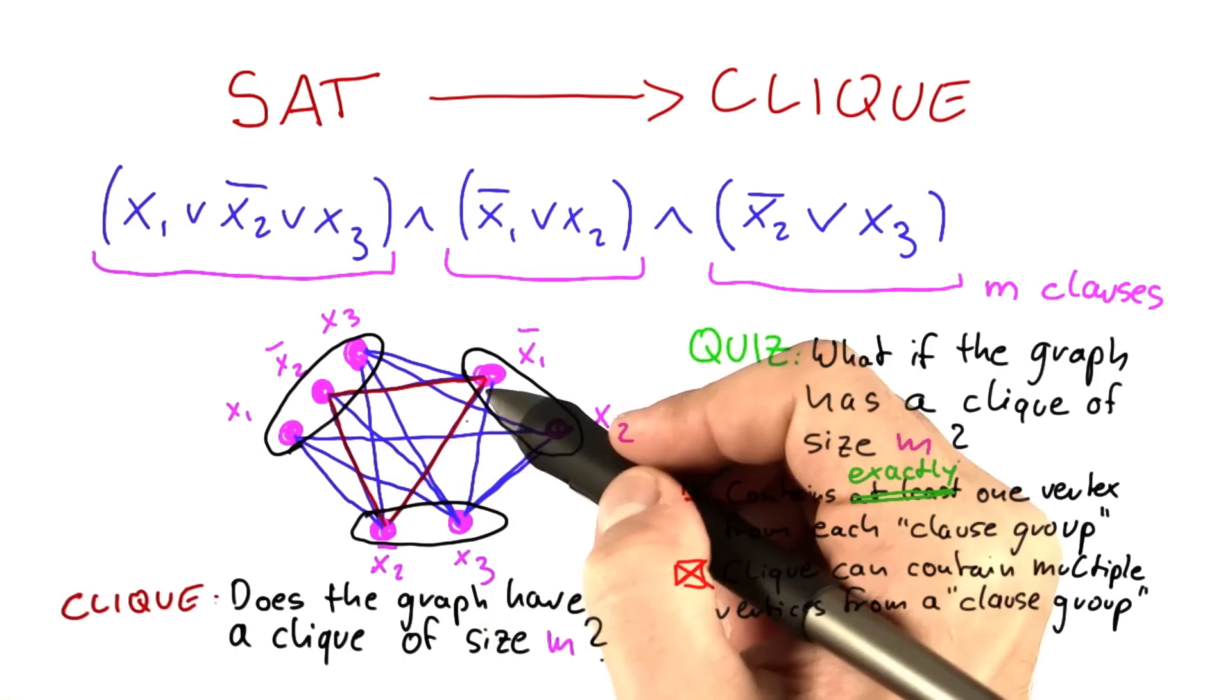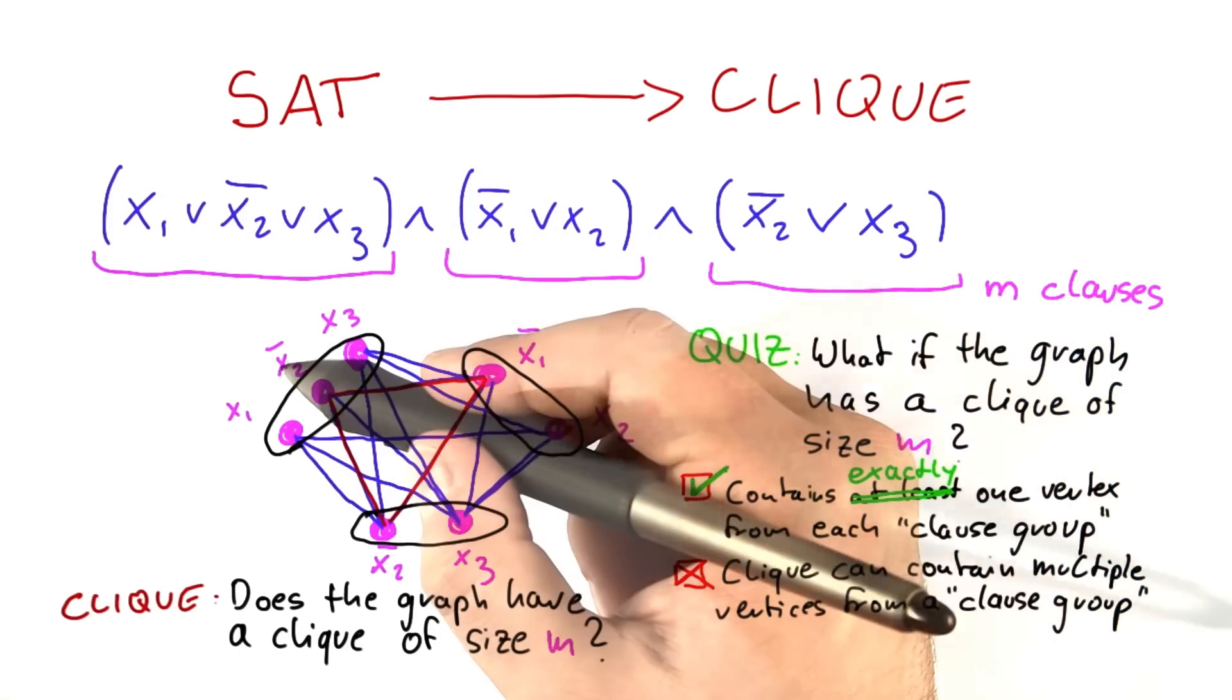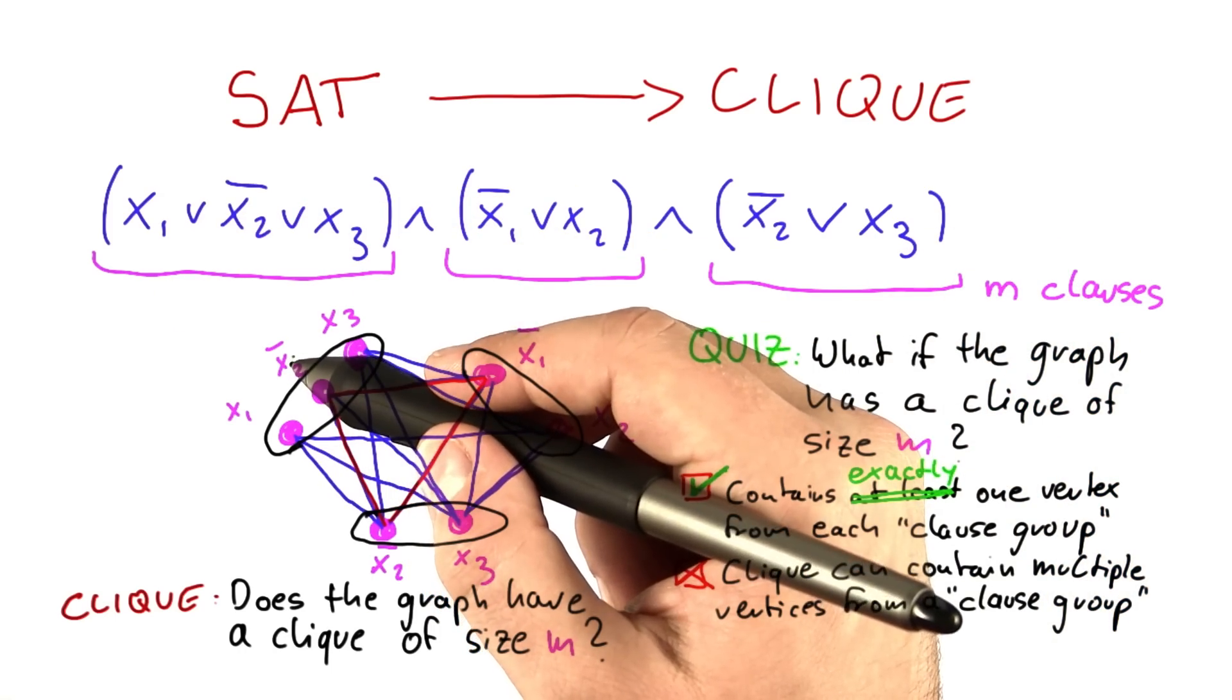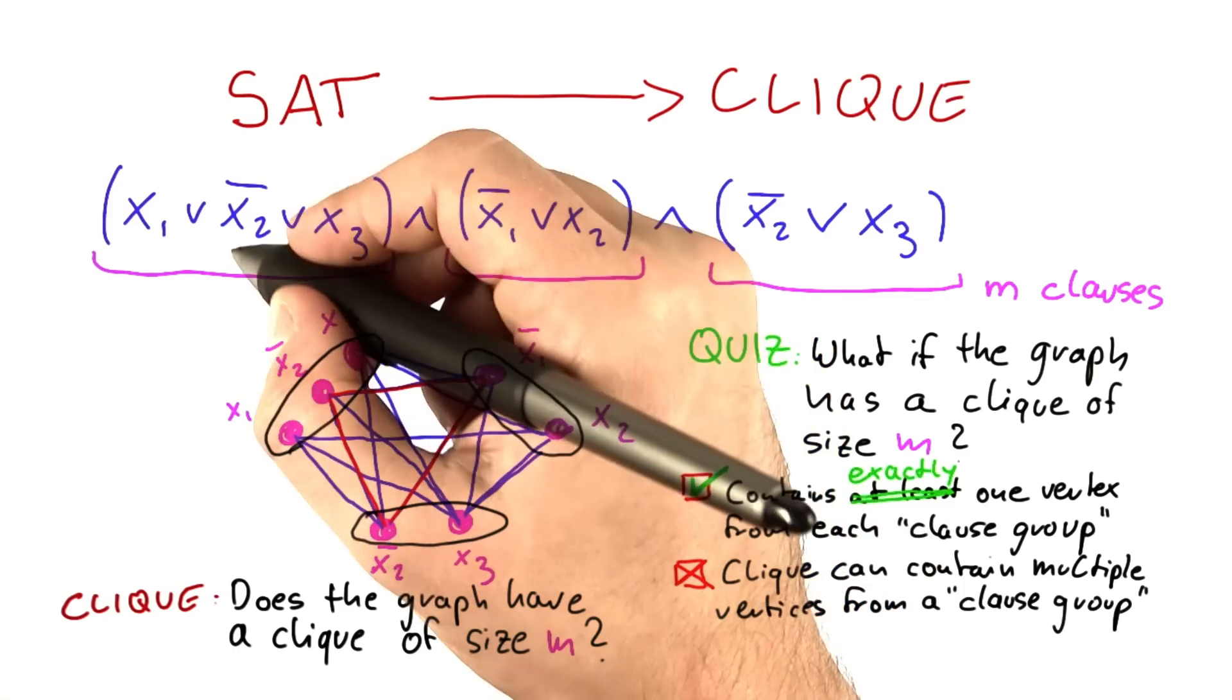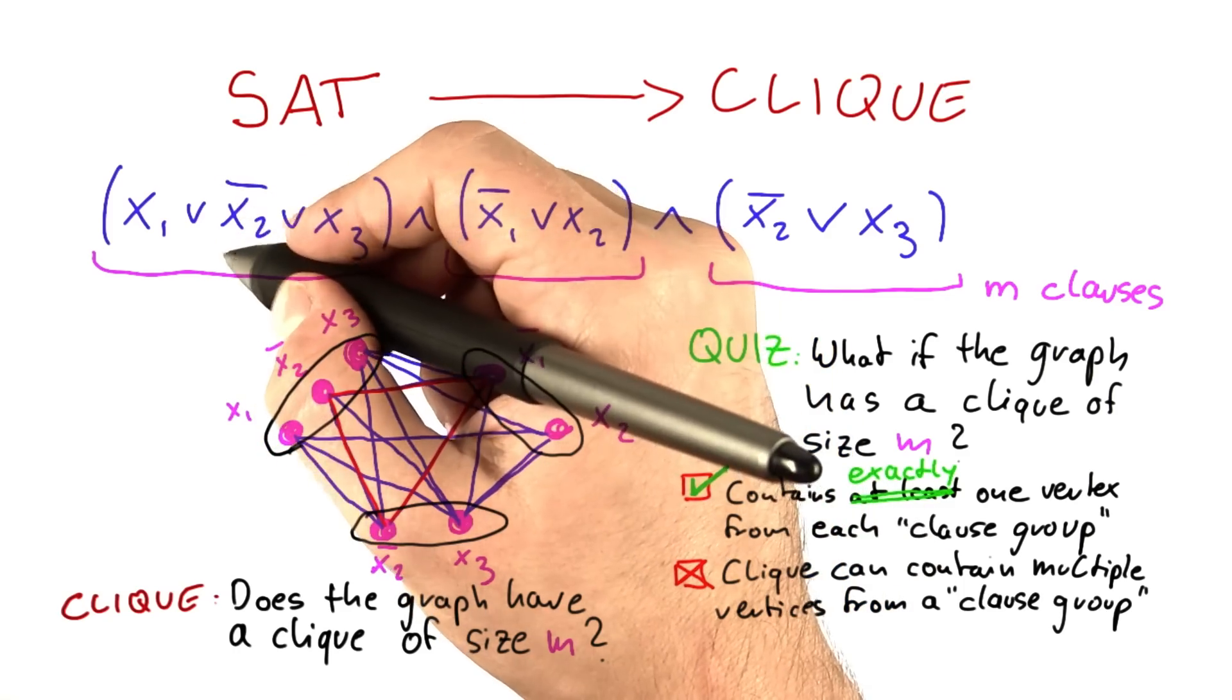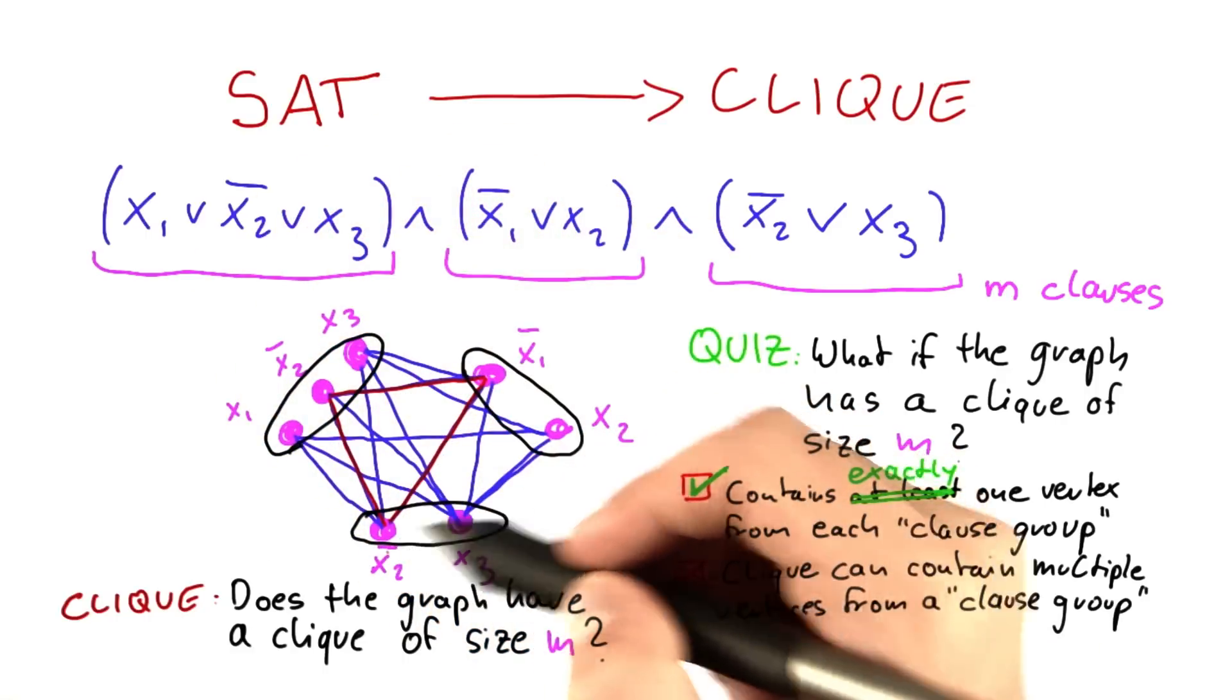But this directly shows us how we can satisfy this Boolean formula here. So if we have a not x2 here, we just set it to 0. So we could just set this one to false so that not x2 becomes true, then this clause here is satisfied. And also this one over here would be satisfied.